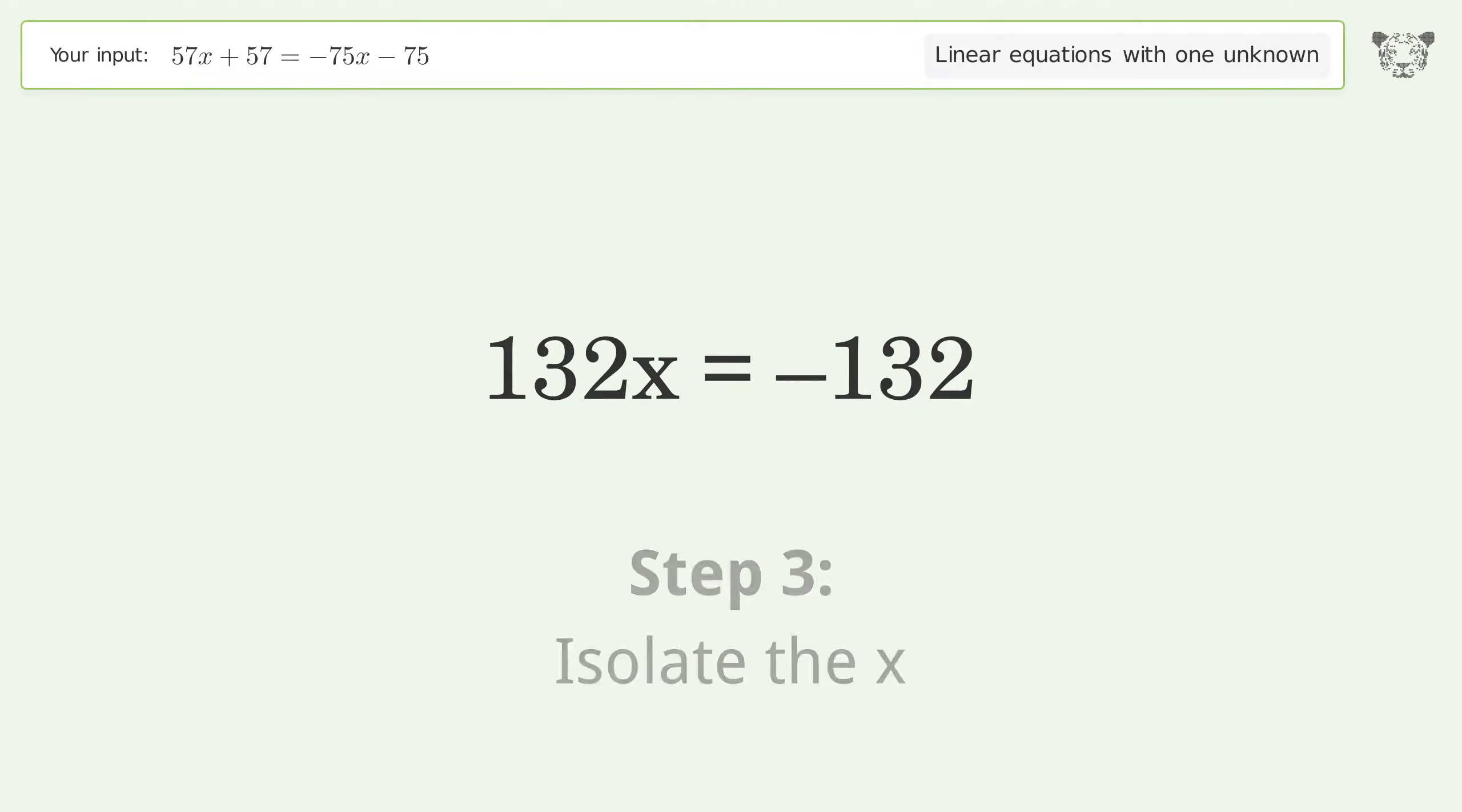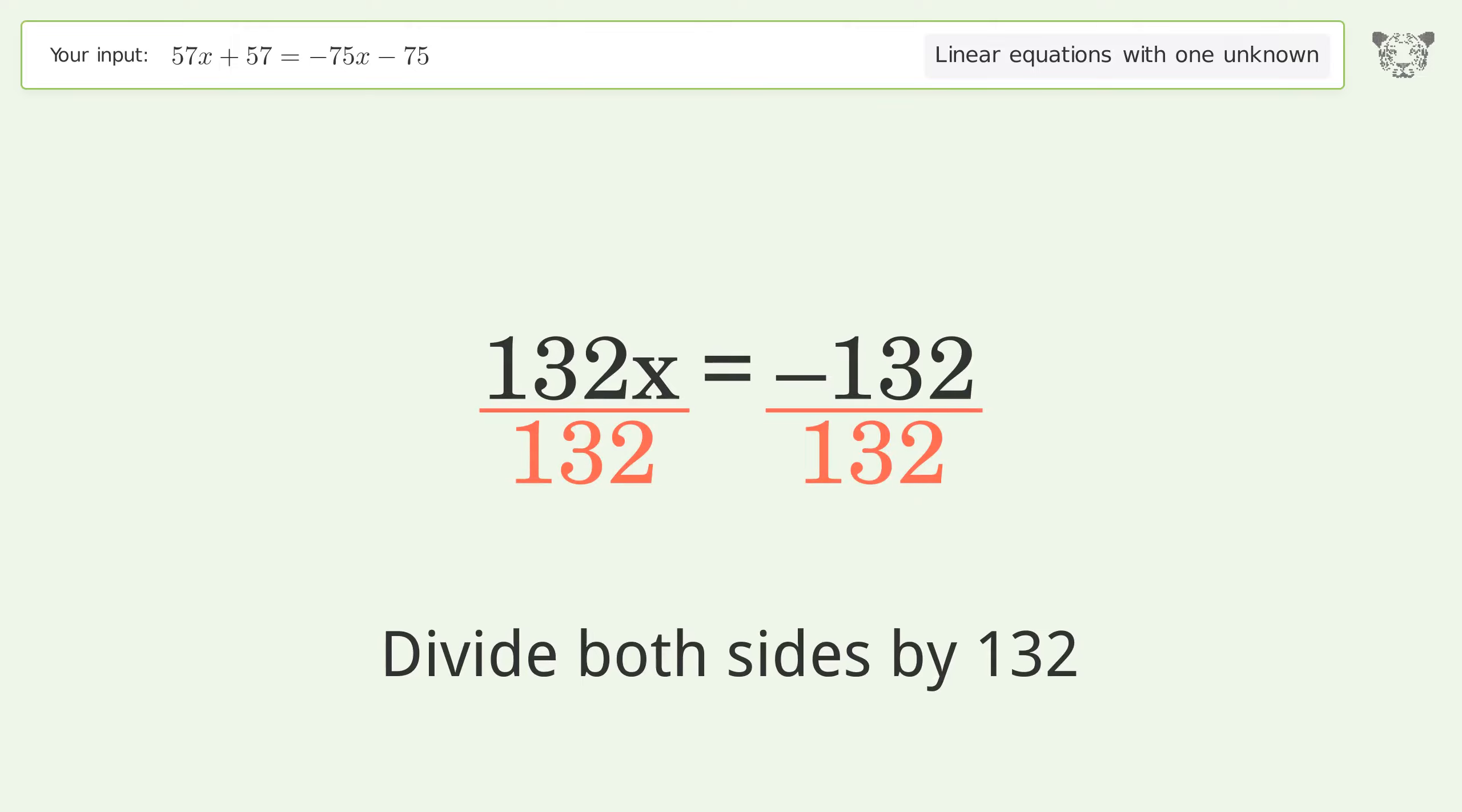Isolate the x. Divide both sides by 132. Simplify the fraction.